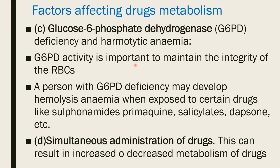Third condition is G6PD deficiency and hemolytic anemia. G6PD activity is important to maintain the integrity of RBCs. A person with G6PD deficiency may develop hemolytic anemia when exposed to certain drugs like sulfonamides, primaquine, succinylcholine, salicylates, and dapsone. All these drugs can cause hemolytic anemia in G6PD-deficient patients.